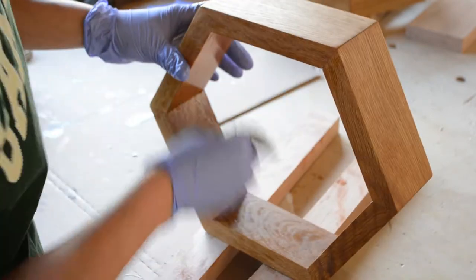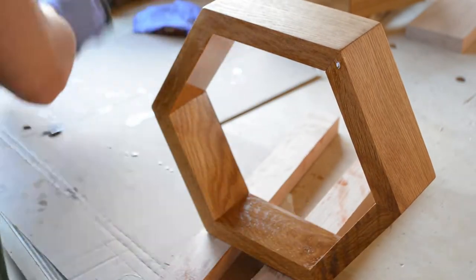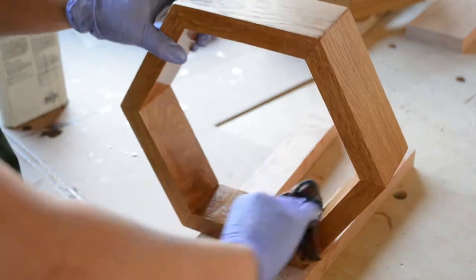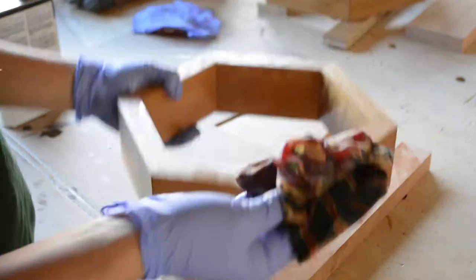Before gluing on the back pieces, I finish the wood completely with teak oil, wipe-on polyurethane, and 600 grit sandpaper. This takes several days, but it's worth the wait.